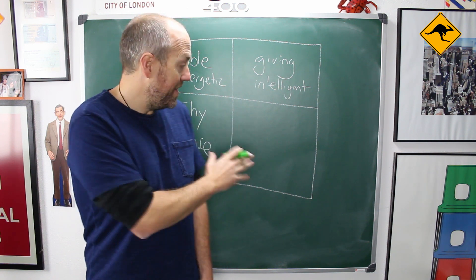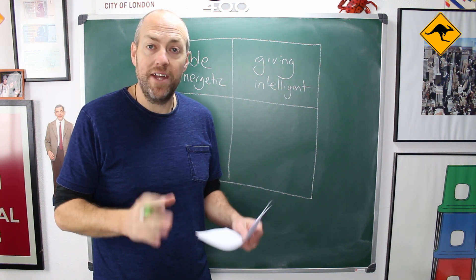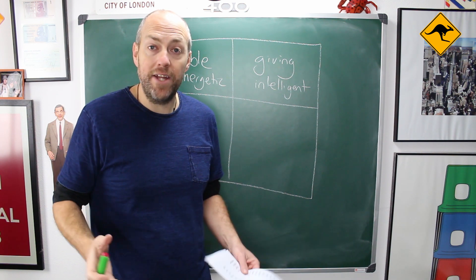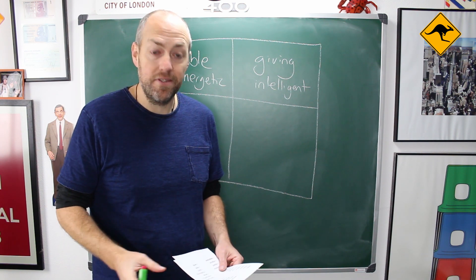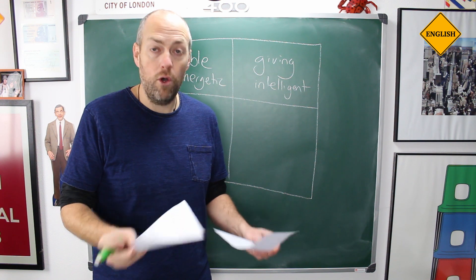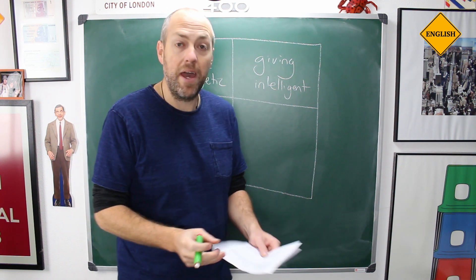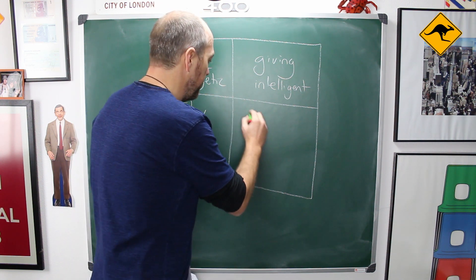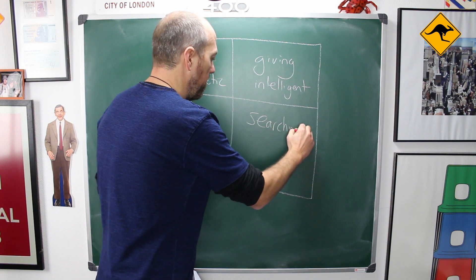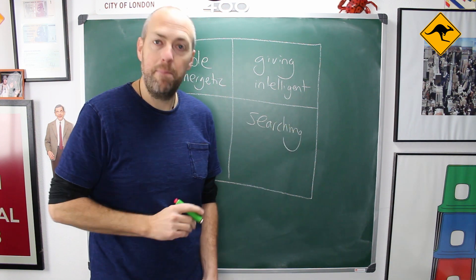Finally, in this last square, we are going to write all of the adjectives that are on the original adjective list but are not written by you or your friend — for example, searching and patient.